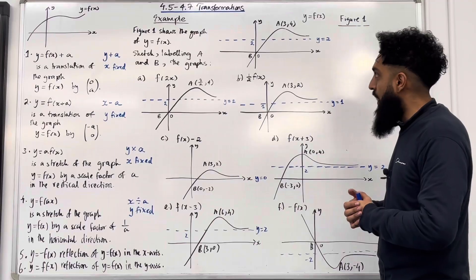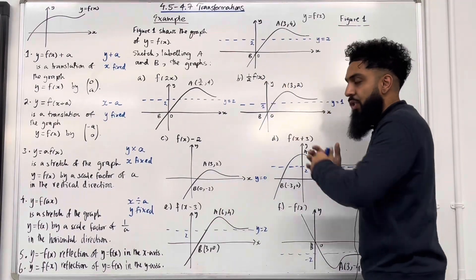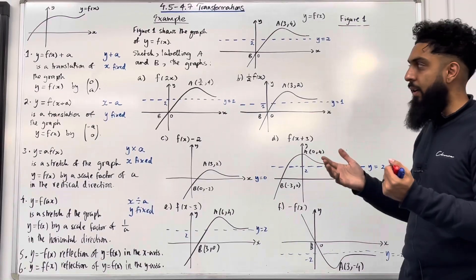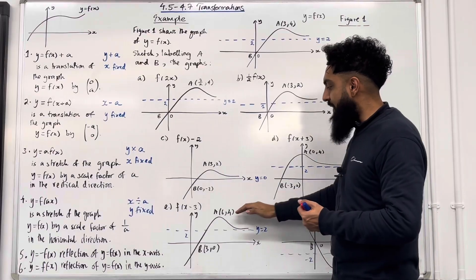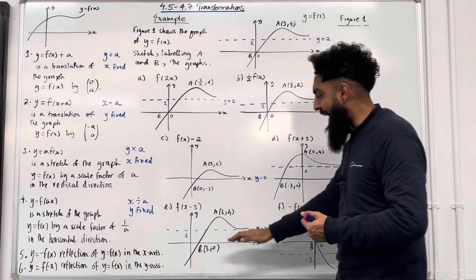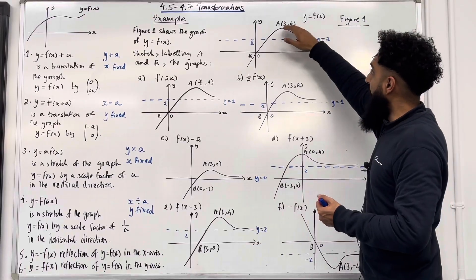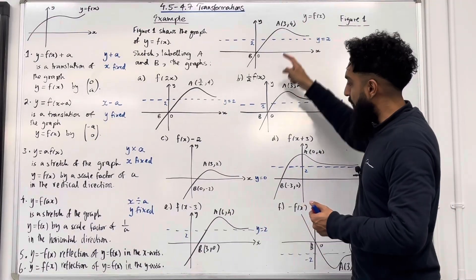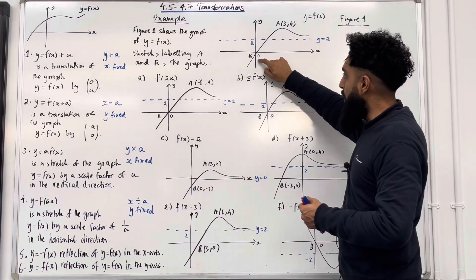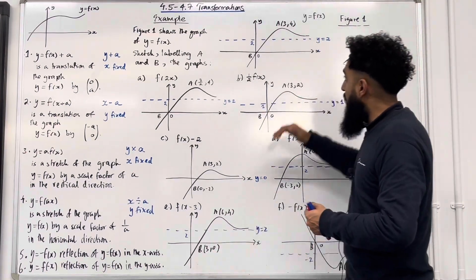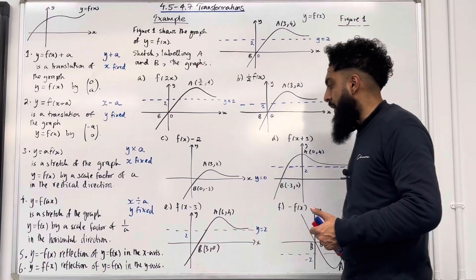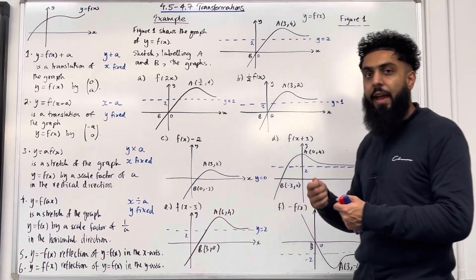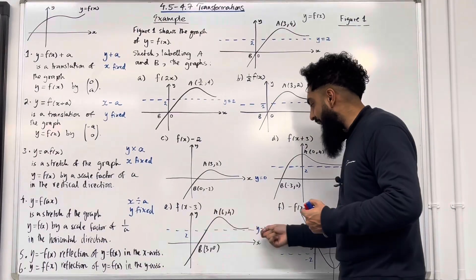Part e: f of x minus 3 inside the bracket. You take your whole function and shift it three units to the right. In other words, you're taking your x-coordinates, adding 3, keeping y fixed. So my new coordinate a is now at (6, 4) — taking 3 and adding 3 gives 6, y remains fixed. My new coordinate b is at (3, 0) — x equals 0, add 3 gives 3, y equals 0 remains fixed. The asymptote is not affected because this function only affects the x-coordinates, so the asymptote is fixed at y equal 2.